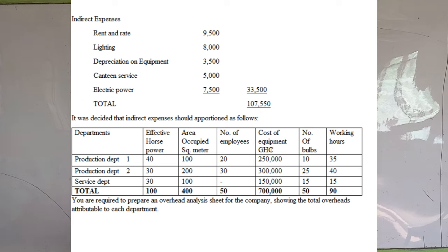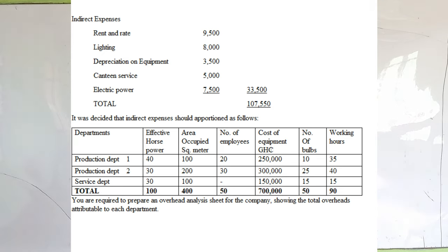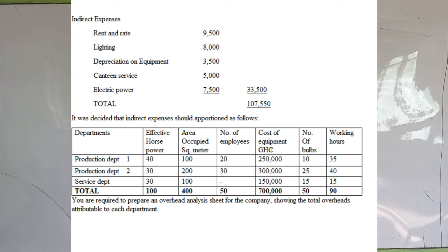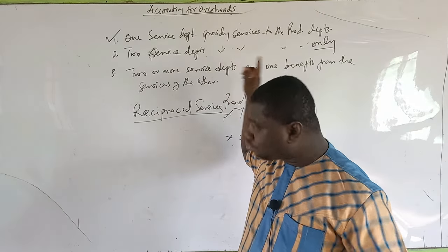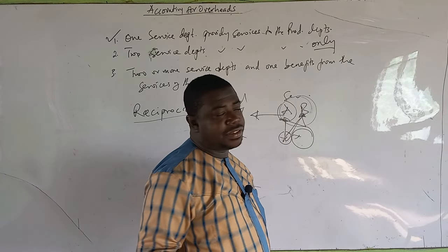It was decided that indirect expenses should be apportioned as follows. We have the departments: Production 1, 2, and the Service Department. The bases provided include effective horsepower, area occupied, number of employees — with 20,000 and 30,000 for the departments — cost of equipment, number of bulbs, and working hours. These are the bases of apportionment we are going to choose from. You are required to prepare an overhead analysis sheet for the company showing the total overheads attributable to each department. Remember, there is a service department in here.